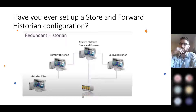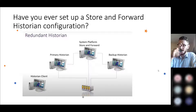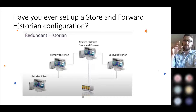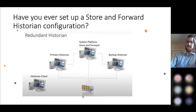I wanted to start off by telling you about the store and forward configuration option. Some of you may already know about this, as it's a standard implementation that will occur automatically on every install. Historian has a Windows process that will run, and I've got a little system block diagram here to help explain this. In this example diagram, I have a PLC connected to a System Platform PC that is then connected to two Historian PCs — one primary and one backup.